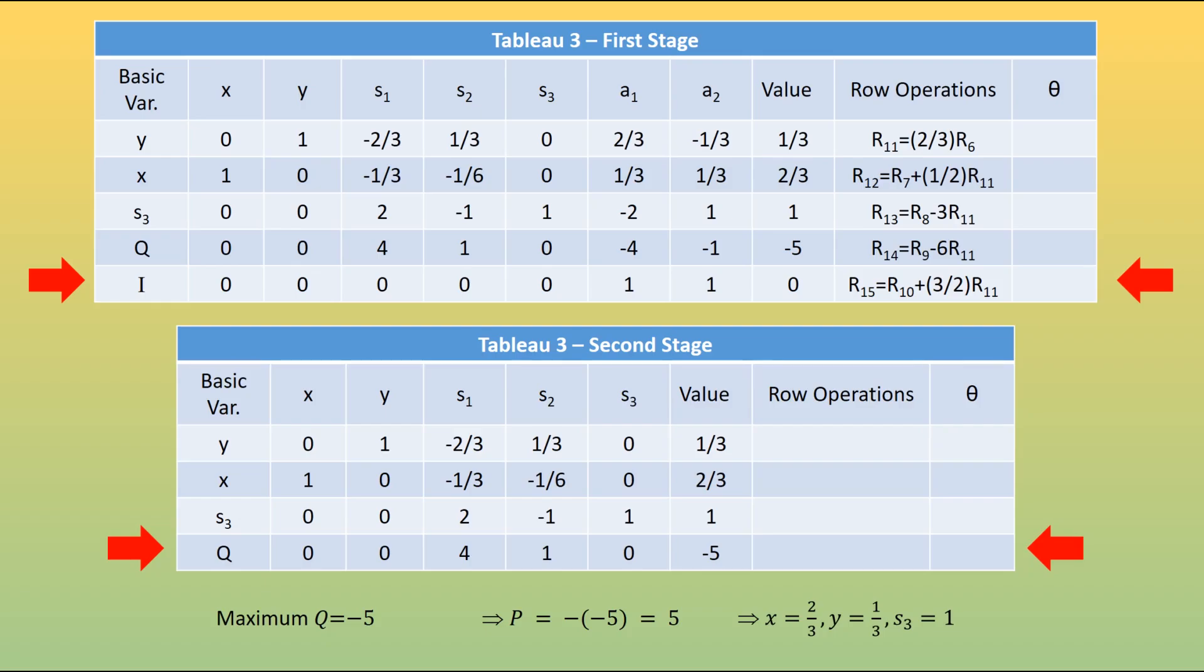So the two-stage method is quite straightforward, but the difficulty is in setting the problem up in the first place. Make sure that any of your constraints that are greater than or equal to, that you subtract a surplus and add in an artificial, and any constraints that are less than or equal to, you just add in a slack as you would normally. Set up i to be minimizing the sum of the two artificials, then work your way through.